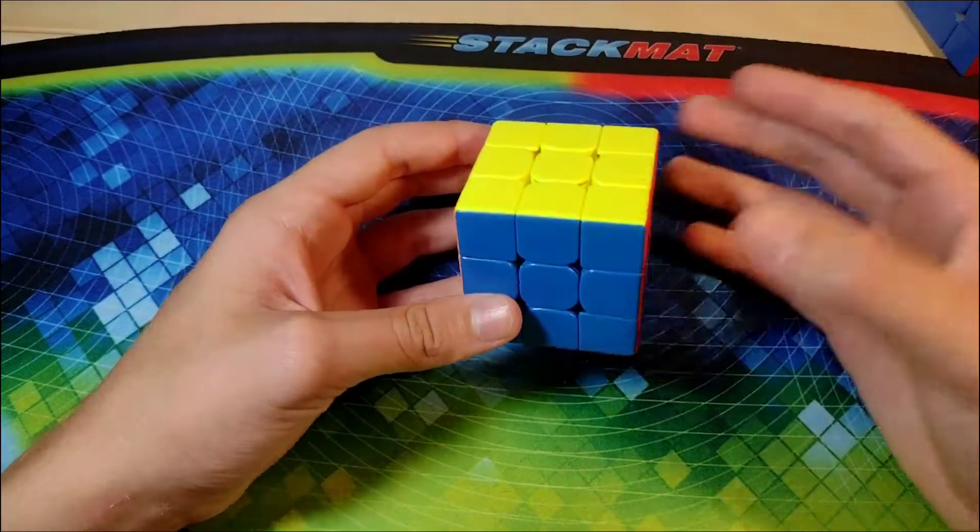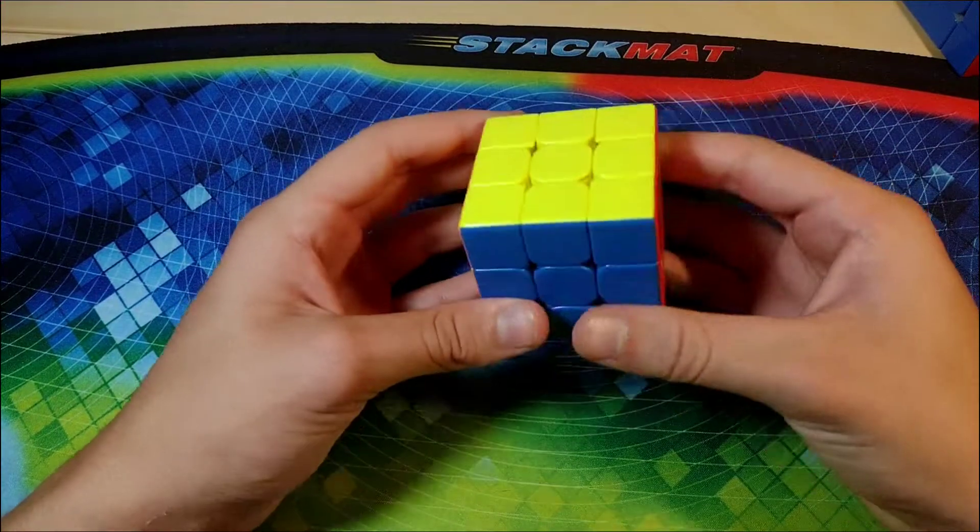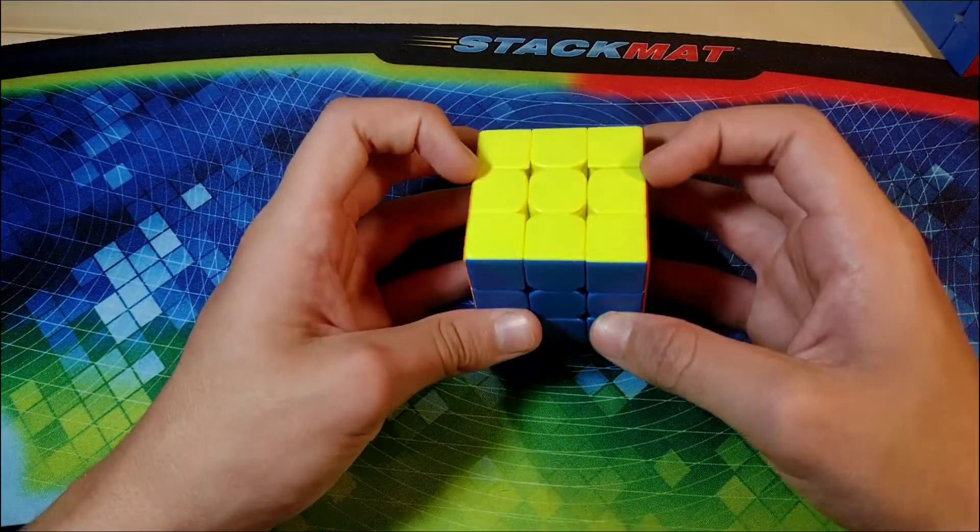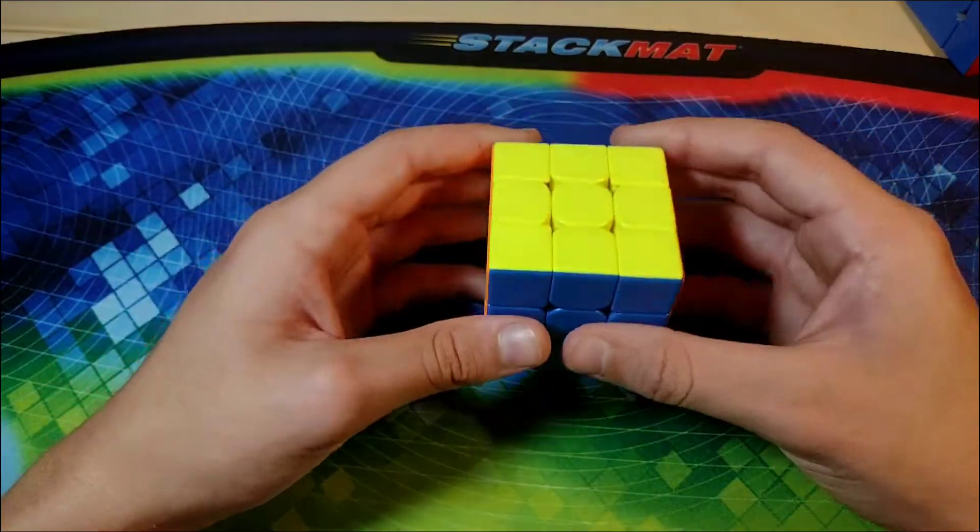Now, there is a slight change for EOBF, which is where you insert the front and UF-UB edges instead of the UL-UR edges. And I'll cover that right now.